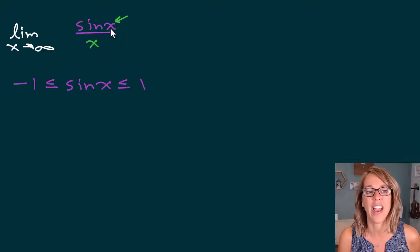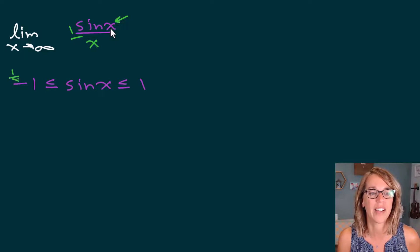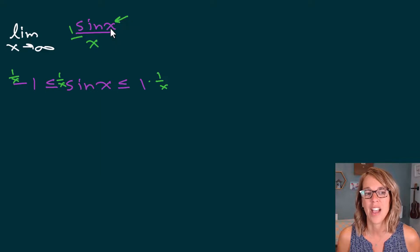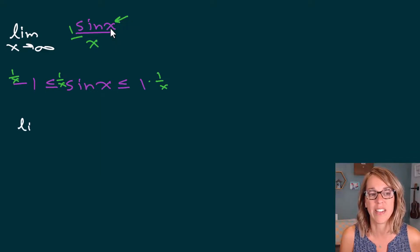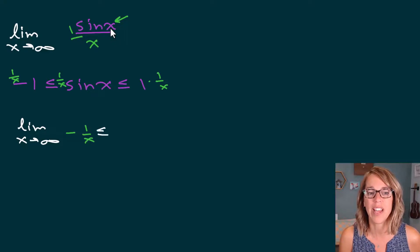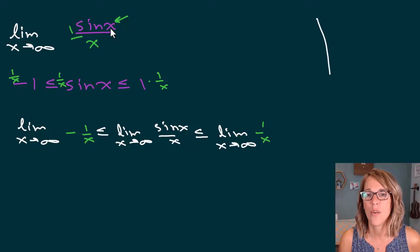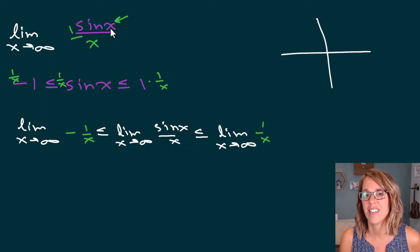I want to multiply through by one over x, multiplying all the way through the inequality. So one over x times negative one, one over x times the sine, and one over x on the right side. I'm ready to apply the limit. So I've got the limit as x approaches infinity of negative one over x on the left, less than or equal to the limit as x approaches infinity of sine x over x, less than or equal to the limit as x approaches infinity of one over x.